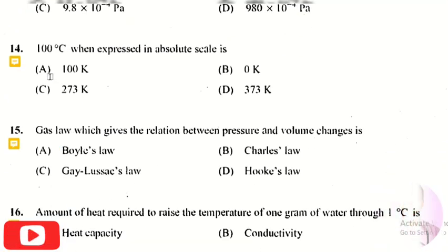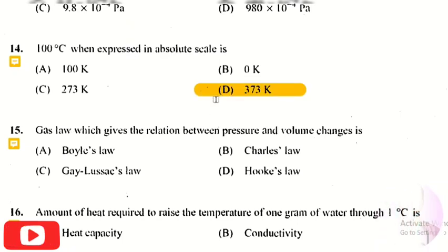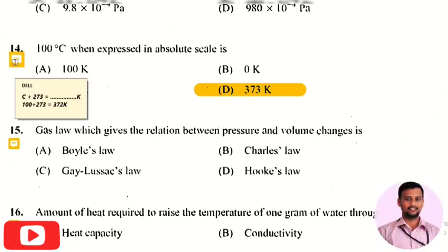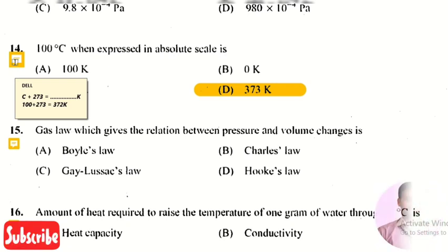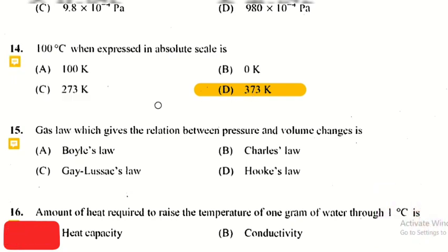The next question: 100°C when expressed in absolute scale is? The right answer is option 4, 373 Kelvin. To convert Celsius to Kelvin, add 273: 100°C + 273 = 373 K.